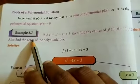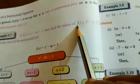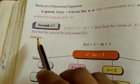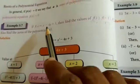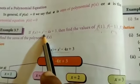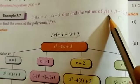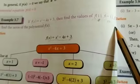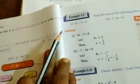Example 3.7. If f of x equal to x squared minus 4x plus 3, then find the value of f of 1, f of minus 1, f of 2, and also find the zeros of the polynomial f of x. We are substituting x equal to 1, then x equal to minus 1, then x equal to 2, and last one f of 3.